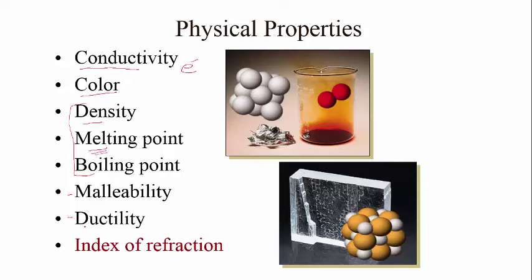Malleability and ductility, as well as conductivity, are primarily for metals and give you those physical properties that allow you to change the form of the metal without changing its identity. Index of refraction is a rather unique physical property. I'll do a demonstration of it in class, but it's the ability to absorb and reflect light based on properties of a substance.